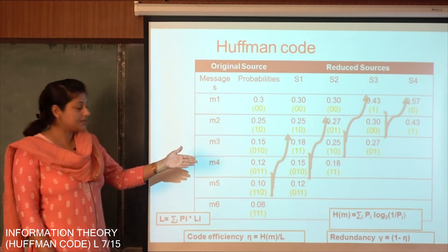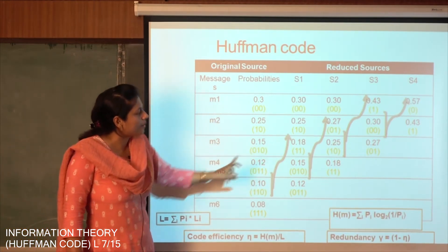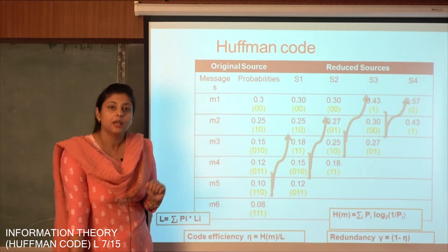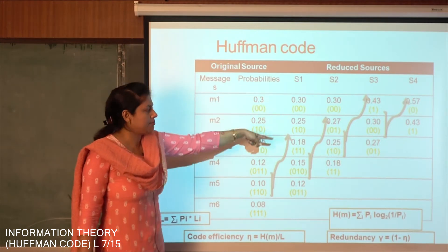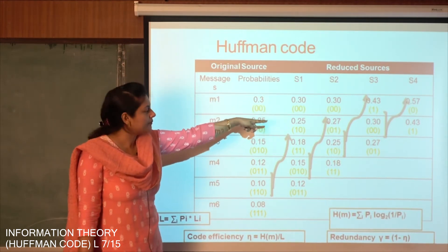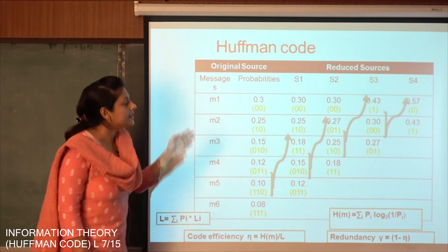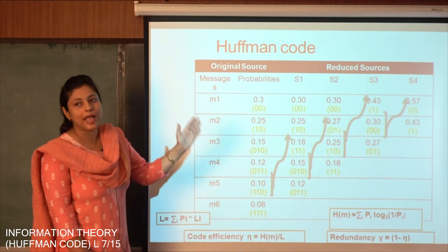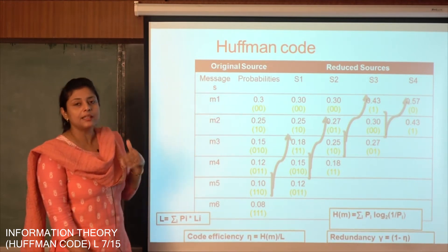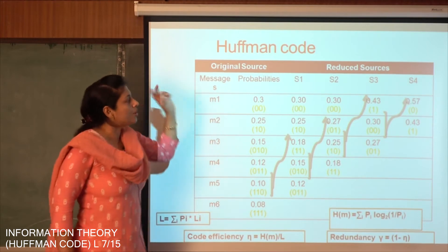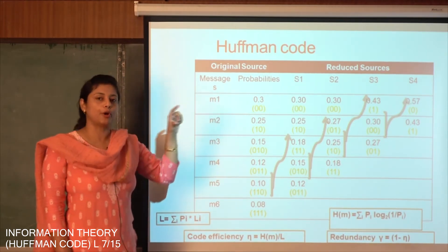So we are adding the last two, 0.15 and 0.12, the result is 0.27. So 0.27 again goes higher up in the table after 0.3, then comes 0.25 and last is 0.18. In this fashion we have to go on adding till the last digit is obtained. In this case since we are dealing with binary numbers, in the last reduced state we should have two probabilities.